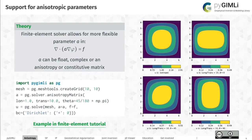Regarding anisotropic parameters: at the equation level we have a general form of a partial differential equation. The parameter A, which in the initial state could only be a floating point vector, can now also be complex and anisotropic — you can use a constitutive matrix for elasticity, for example. There's a quick example in the lower left and if you're interested in anisotropic parameters, check out the finite element tutorial.